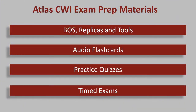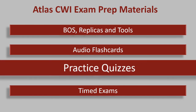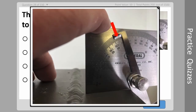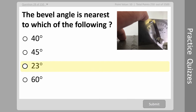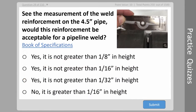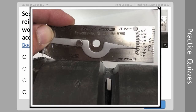Now we'll take a look at our third set of prep materials: practice quizzes. Here's a quiz question that uses a picture showing you how to take a bevel angle measurement — you can click on it to expand it and see the details. Once you've made your selection, you'll get immediate feedback on whether you got the answer correct or not. The Part B practice quiz contains 275 questions that cover the book of specifications, replicas, and measuring devices.